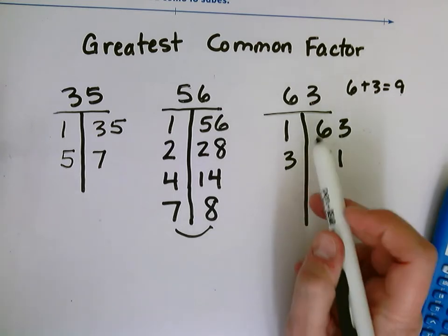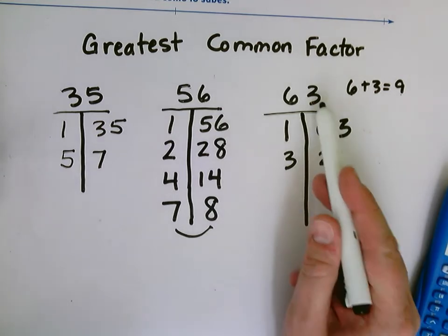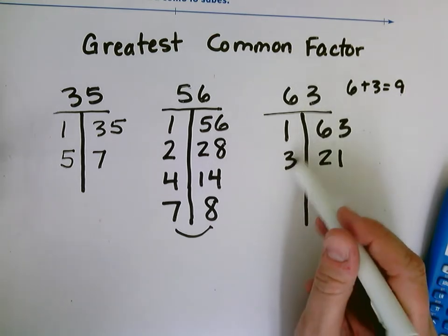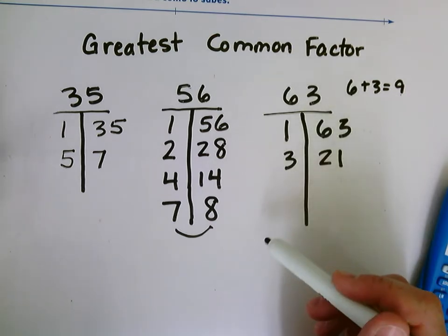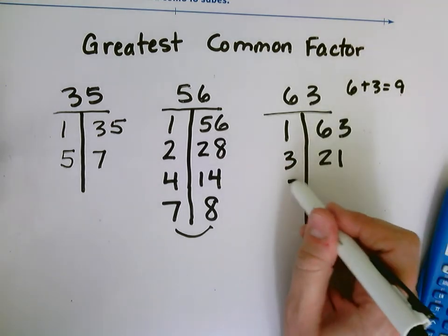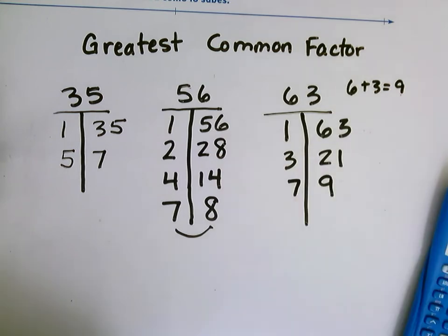4 is not a factor, it's not even. 5 is not a factor, it does not end in a 5 or a 0. 6 is not a factor because 2 is not a factor. 7 is a factor of 63. I know that 7 times 9 is 63.